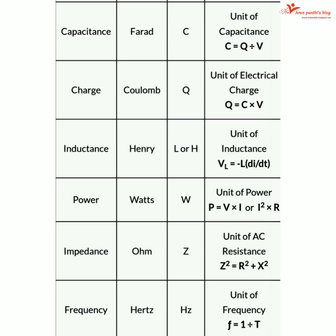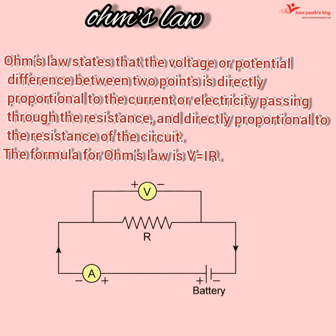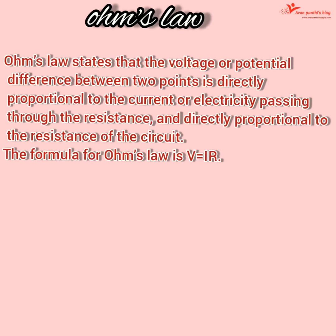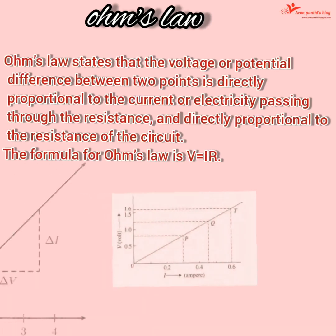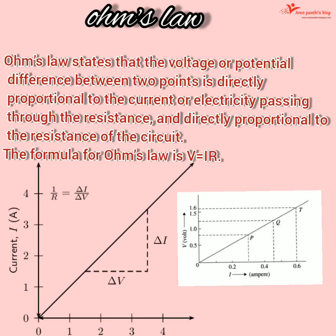Ohm's law states that the potential difference between two points is directly proportional to the current passing through the circuit, provided physical conditions such as temperature remain constant. The current between two points in a conductor is directly proportional to the potential difference between those two points; that is, V ∝ I.